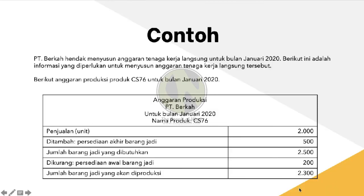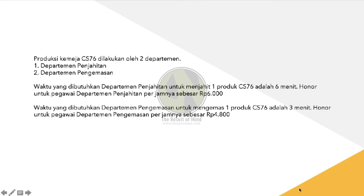Soal ini adalah lanjutan dari contoh soal anggaran bahan baku. Diketahui, anggaran produksi dari PT Berkah dengan jumlah barang jadi CS76 yang akan diproduksi adalah 2.300 unit. Produksi CS76 ini dilakukan oleh Departemen Penjahitan dan Departemen Pengemasan. Departemen Penjahitan membutuhkan waktu 6 menit untuk menjahit satu produk CS76 dengan upah per jamnya Rp6.000. Sedangkan Departemen Pengemasan membutuhkan waktu 3 menit untuk mengemas satu produk dengan upah per jamnya Rp4.800.